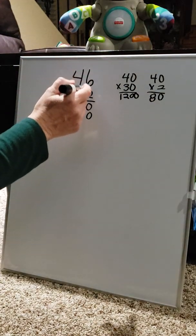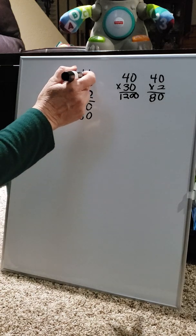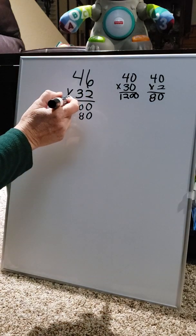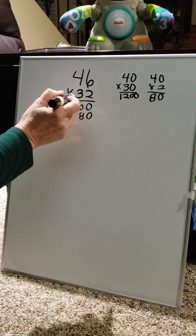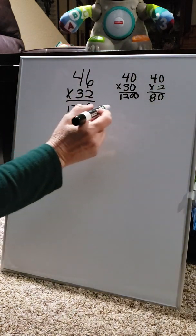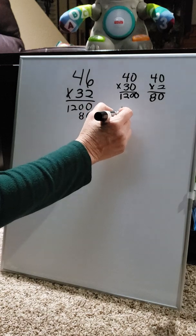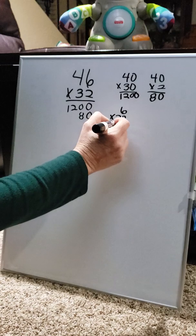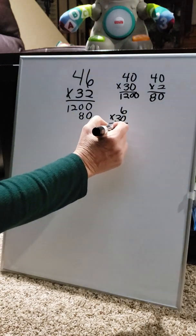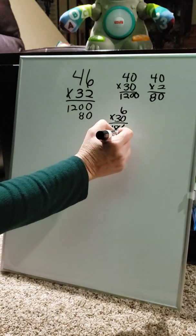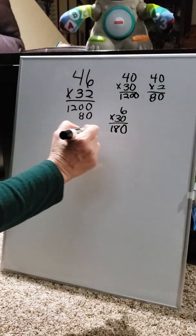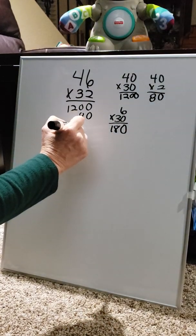Next, we're going to do the right hand side, the ones value. 6 times 30. We're going this way because it's in the tens value. 6 times 30. 6 times 3 is 18. 6 times 0 is 0, making it 180. And bring that under.